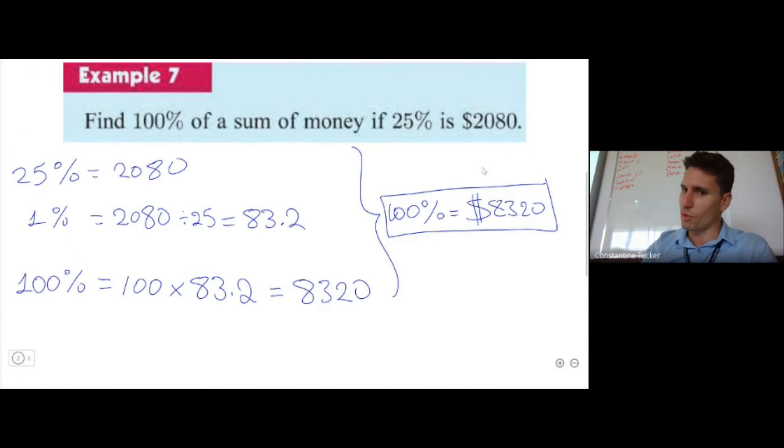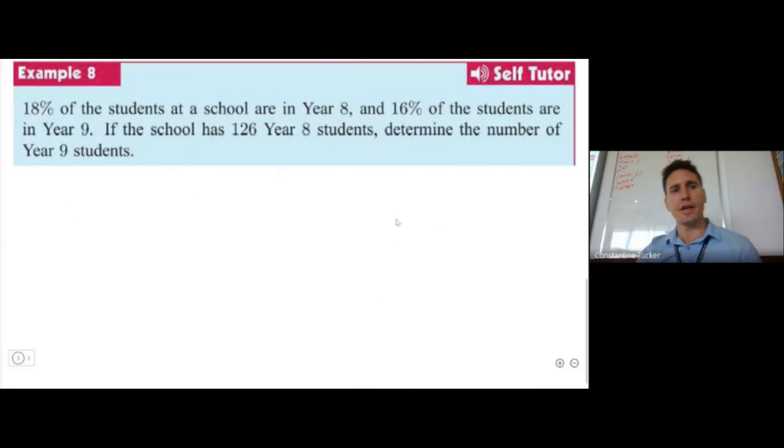And then I have one more example, just one more to show you. Yes, here it's always the same process: we go to 1% and from 1% we go to 100%. Okay guys, last example, let's do this.